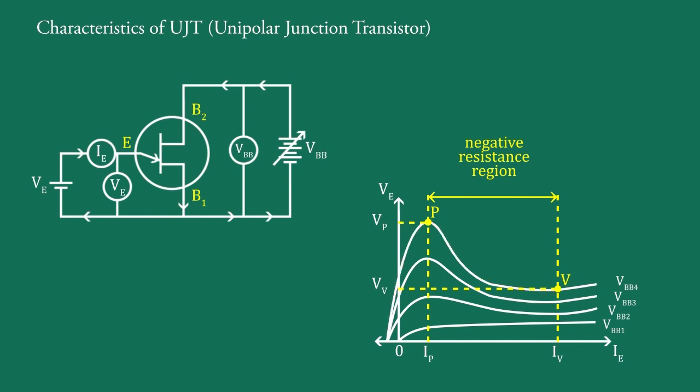The region left to the peak, that is this one, is known as cut-off region because in this region emitter-base junction is cut off, that is reverse bias. The region between peak point and valley point, that is this one, is called negative resistance region or active region. The region right to the valley, that is this one, is known as saturation region.